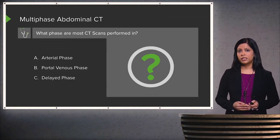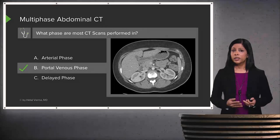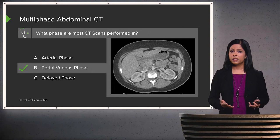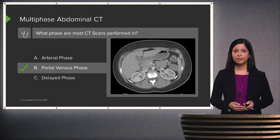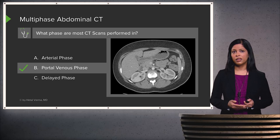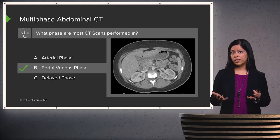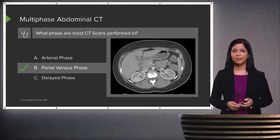So what phases are most CT scans performed in? It's actually the portal venous phase, as we discussed, because the solid organs are best seen in the portal venous phase. We've gone over the different techniques used to evaluate an abdominal CT scan, the pros and cons of each one, and when each should be used. The three major factors are intravenous contrast, oral contrast, and different delays of time after the administration of intravenous contrast.